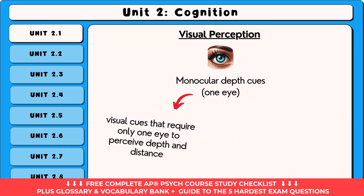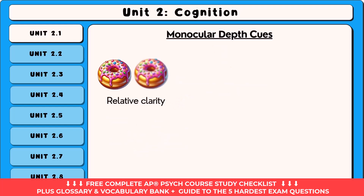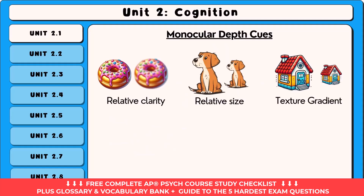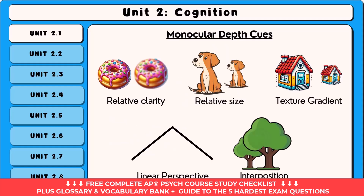Monocular depth cues are visual cues that require only one eye to perceive depth and distance. AP Psychology requires that you know about five monocular depth cues: relative clarity, relative size, texture gradient, linear perspective, and interposition.